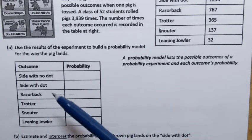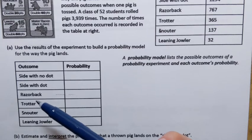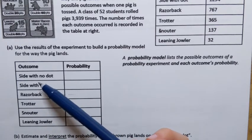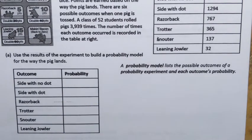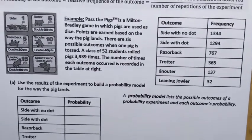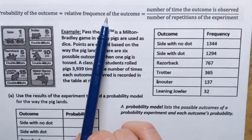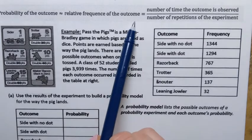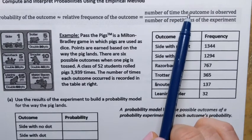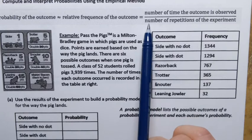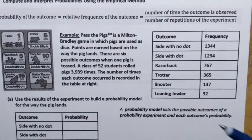In this situation, the outcomes are not equally likely — some outcomes are more likely than others. It's easier for the pig to land on the side with no dot compared to landing on the snout. So how do we calculate probabilities in this case? That's where we use the empirical method. According to the empirical method, probability is approximately the same as the relative frequency of outcomes. Relative frequency is the same as proportion — we take the number of times a specific outcome is observed and divide by the total number of repetitions of the experiment.